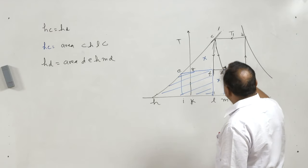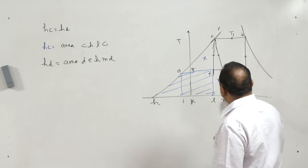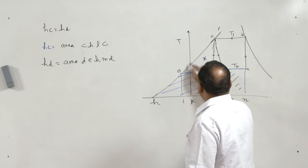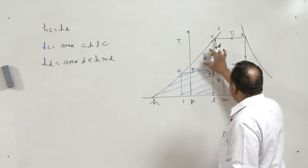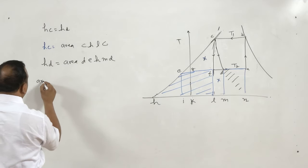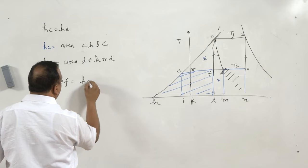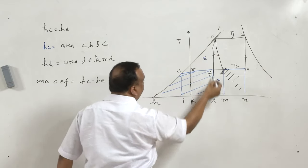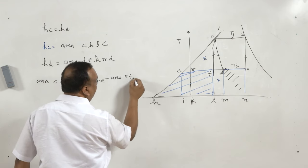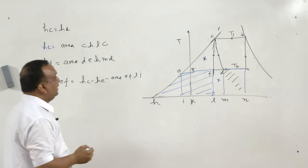To repeat: enthalpy at C equals enthalpy at D. The area for enthalpy at C and the area for enthalpy at D share a common region, so we can always say that the non-overlapping area on one side equals the non-overlapping area on the other side. Now, if we are able to find the area of one diagram, we can find the area of the other. The area of triangle C-E-F is equal to H_C minus H_E minus the area E-F-L-I.